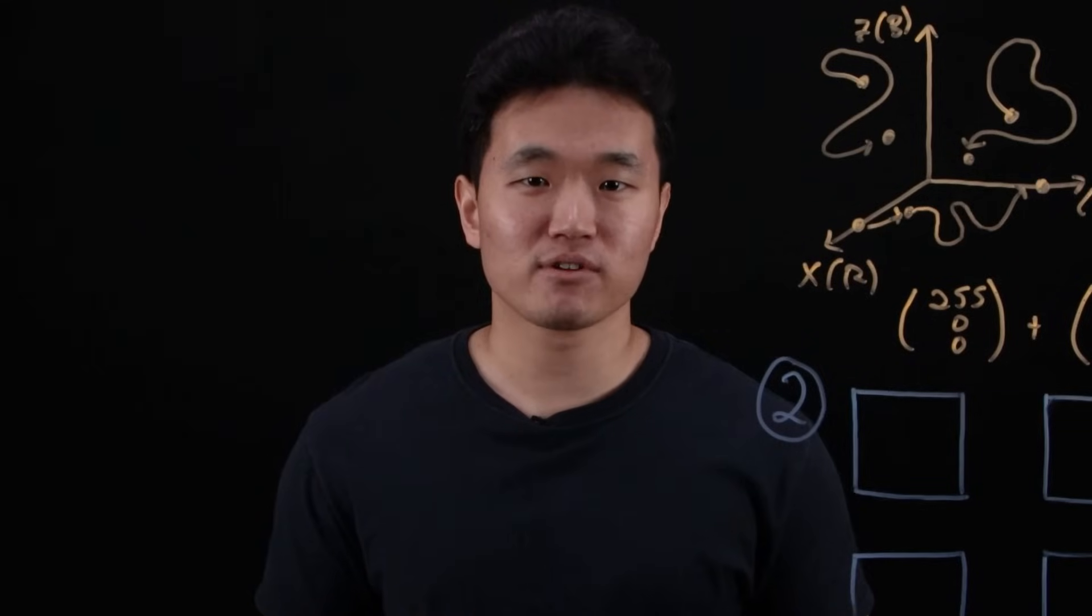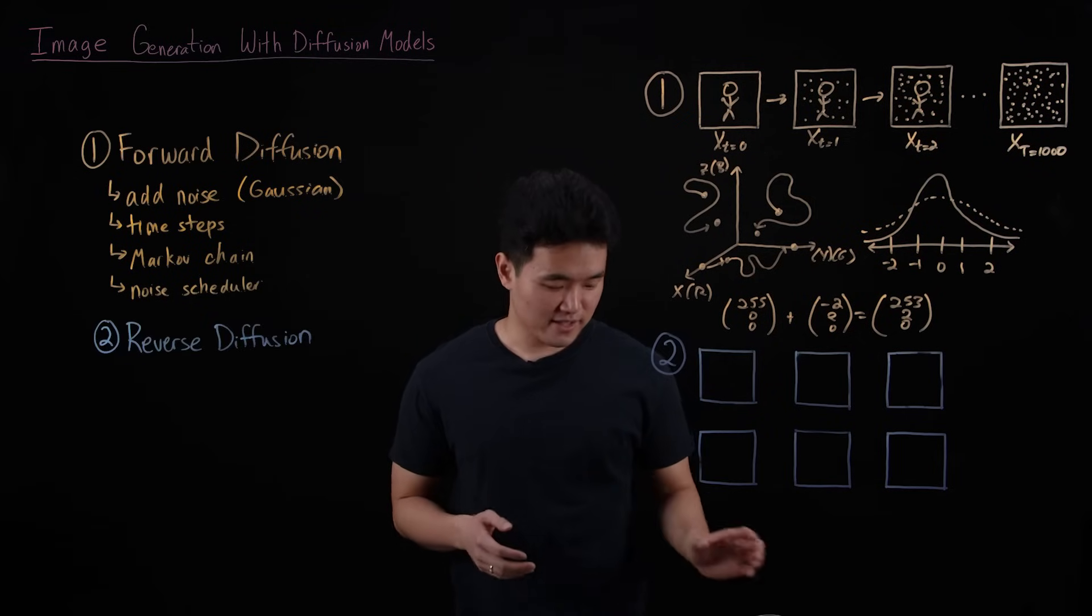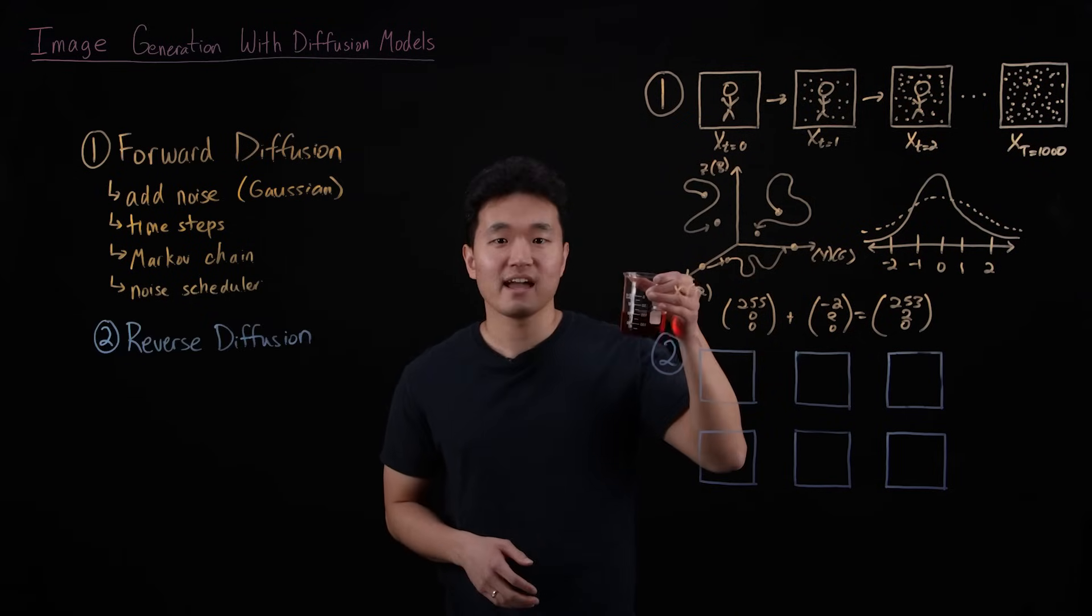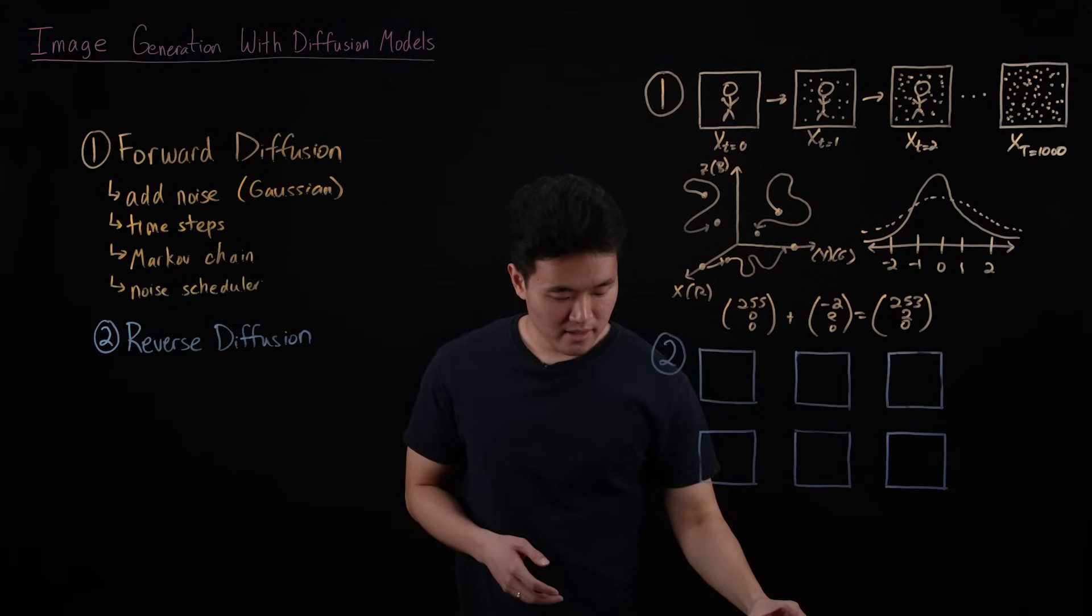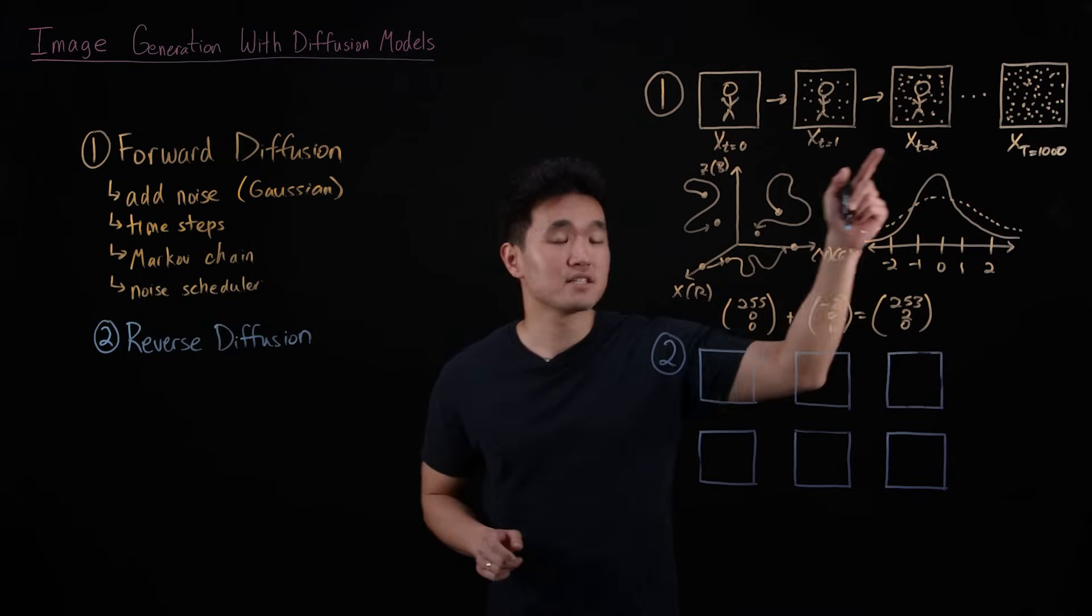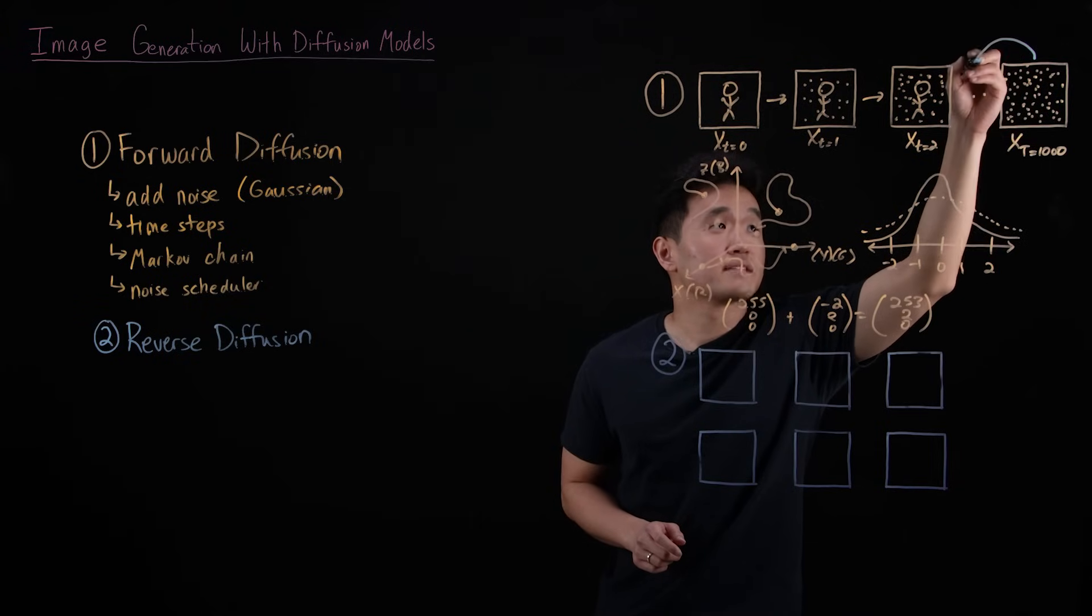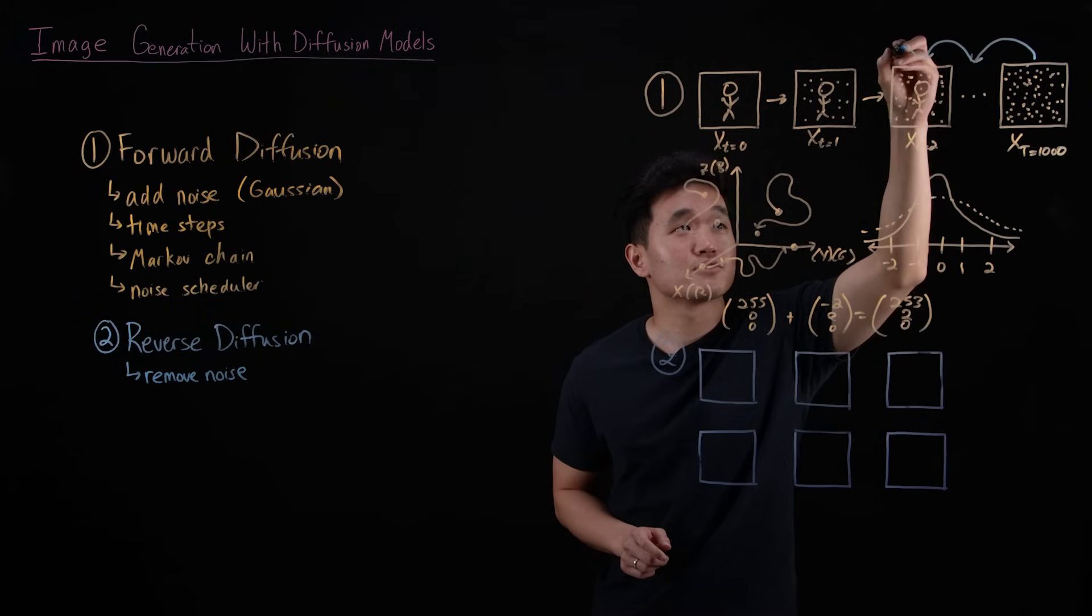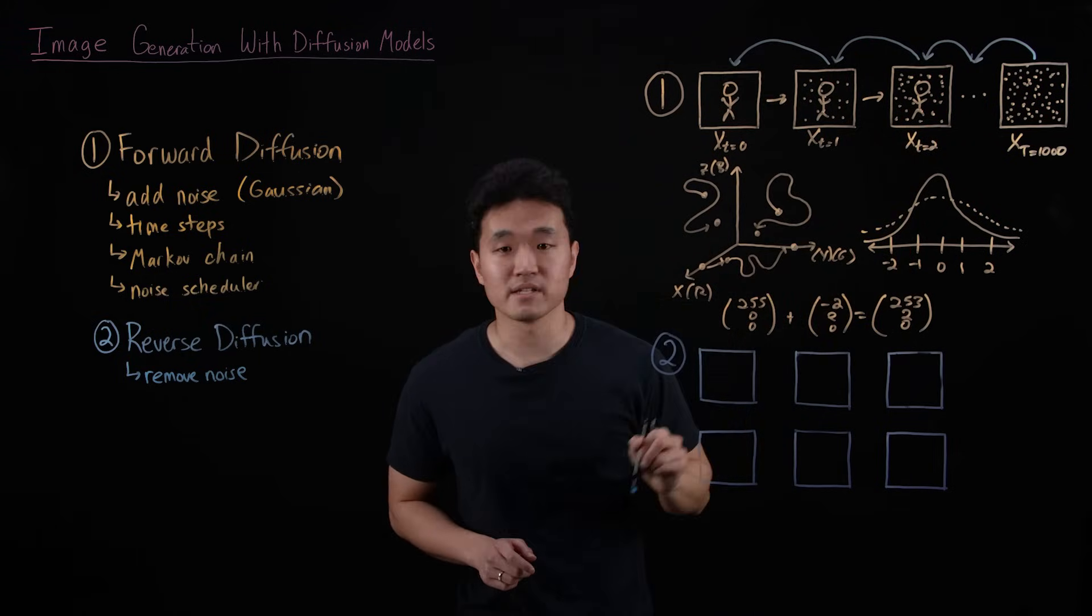So after forward diffusion comes the opposite, reverse diffusion. This is similar to the process of if I took the beaker of red water, and I somehow removed the red dye to get back to the clear water. Similarly, for reverse diffusion, we're going to start with our image of random noise, and we're going to somehow remove the noise that was added to it in very structured and controlled manners in order to reconstruct our clear image.